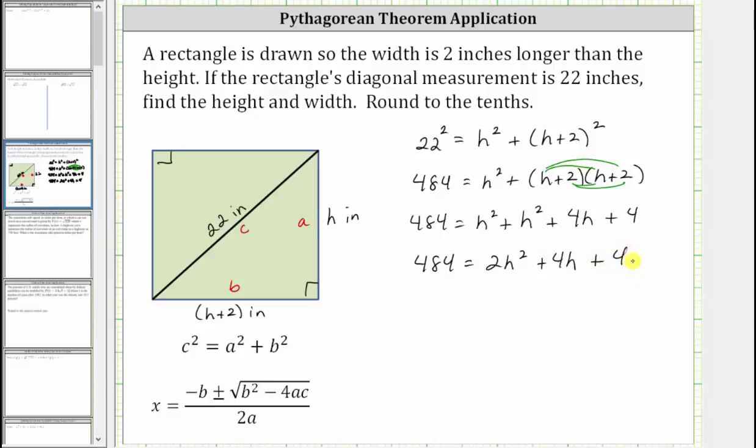And now to set the equation equal to zero, we subtract 484 on both sides. Simplifying, we now have zero equals two h squared plus four h, and then four minus 484 gives us minus 480.